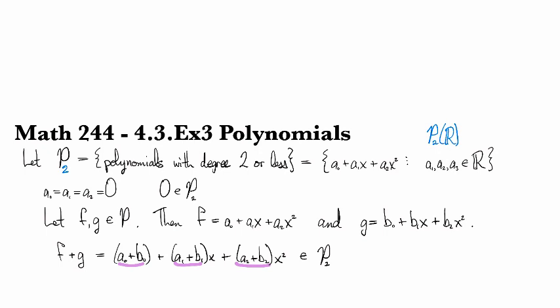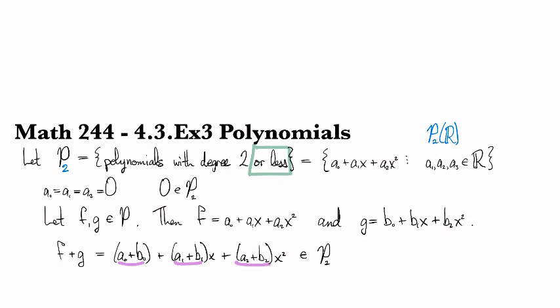Notice, by the way, that there's a good reason why we have this unfortunate or less notation on the end. And that's because if I had something like f was x minus x squared and g was x squared, then f plus g would be equal to x. So the polynomials of degree exactly 2 is not a vector space, because I can have something like this happen and have the sum not have, so the degree of f plus g is not equal to 2.